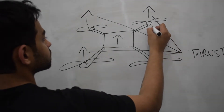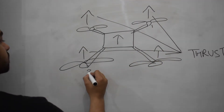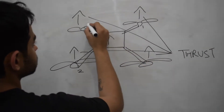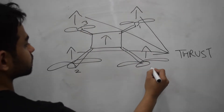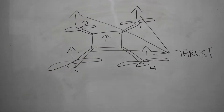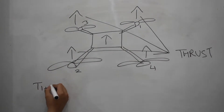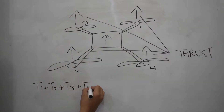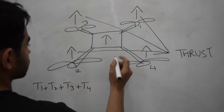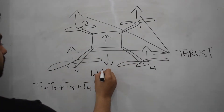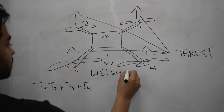Since this is a top view and our drone is facing towards the top of the board, the motors are named 1, 2, 3, and 4. When the thrust generated by all these motors equally is greater than the weight of the drone, it causes lift.